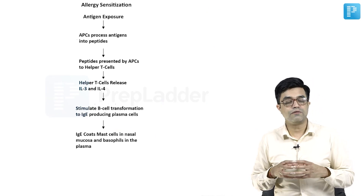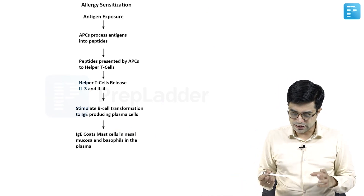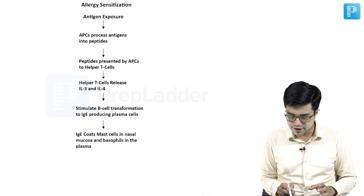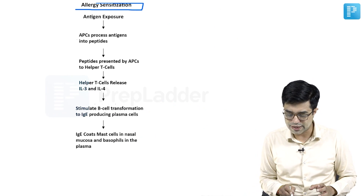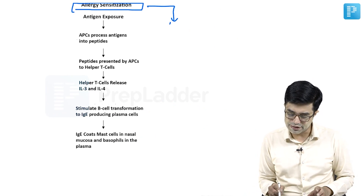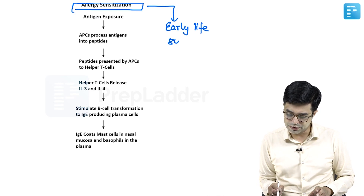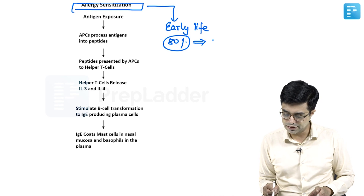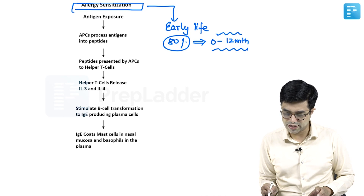To talk more technically, let us look at this flowchart. I have tried to explain how allergy sensitization happens. The point to remember is it happens in early life — 80 percent of sensitizations tend to happen between 0 to 12 months of age.